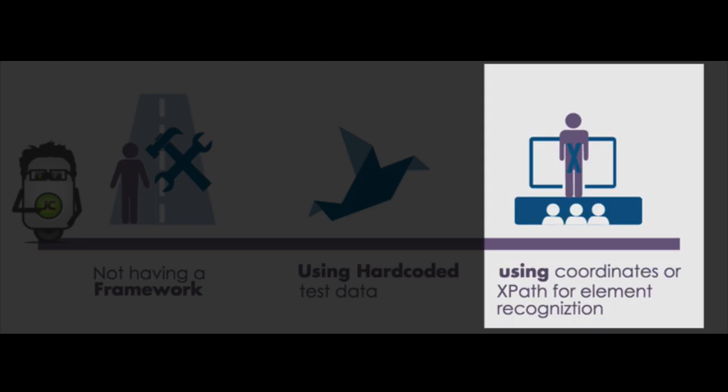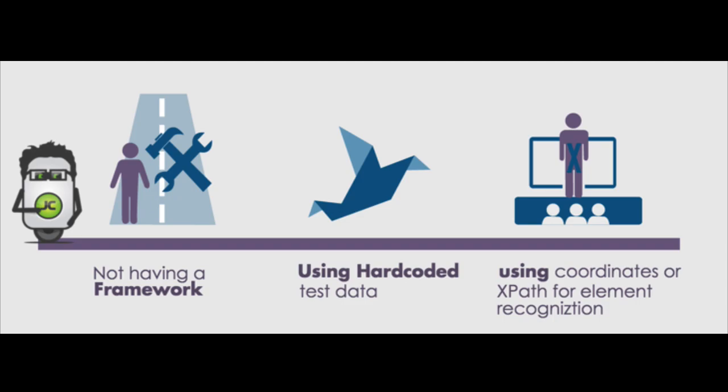Number three, using coordinates or XPath for element recognition. A small change to the coordinates will cause your test to fail. Anytime someone moves an element, that XPath changes. You really want to use an element ID, unique ID, or name whenever possible.